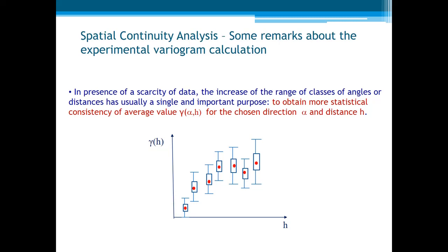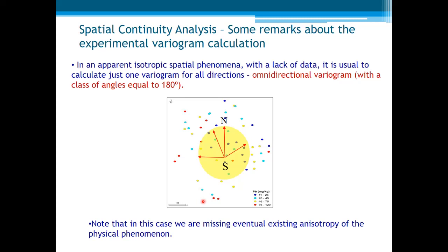Here are some remarks about the experimental variograms calculation. For example, in presence of scarcity of data, the increase of classes of angles or distances has usually one single and important purpose: to obtain more statistical consistency of the average values of the variograms for the chosen direction and the distance h.